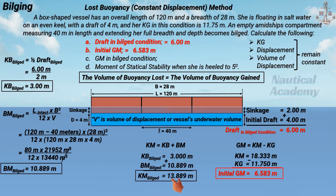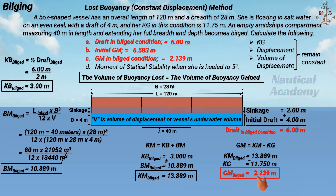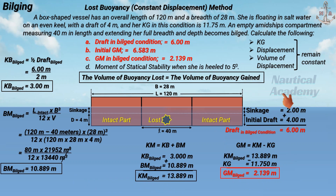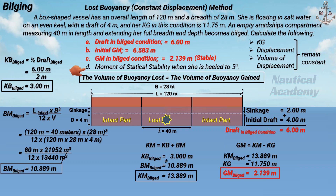Adding KB and BM, the KM in the bilged condition is 13.889 meters. Subtracting KG from KM, the GM in the bilged condition is positive 2.139 meters. Remember that KG when using this method remains constant. This indicates that the vessel remains in a stable condition, although damage has occurred and repairs are necessary.